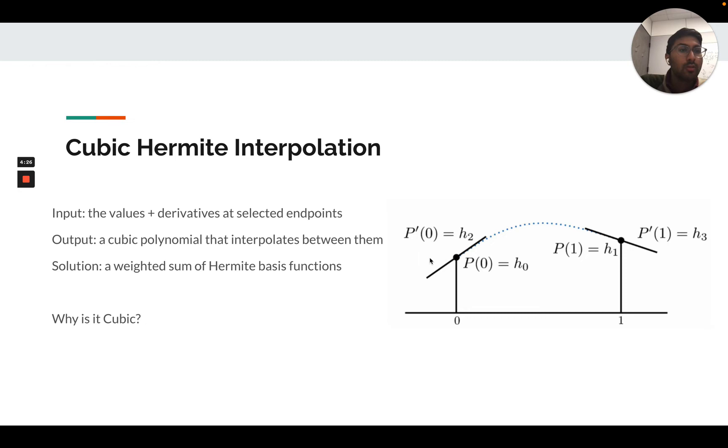In addition, the user provides as input to cubic Hermite interpolation algorithm the first derivative of the polynomial at zero, so the tangent to the curve that's desired at zero, and then the tangent to the curve at one. As output of this interpolation is a cubic polynomial that will interpolate between these points.